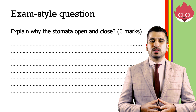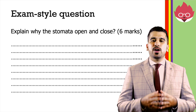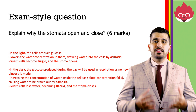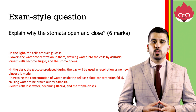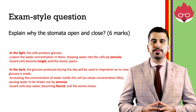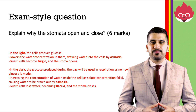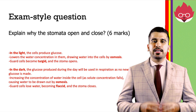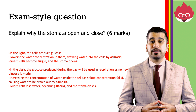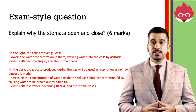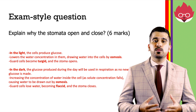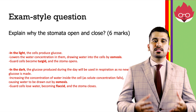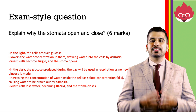Let's now look at an exam-style question: Explain why the stomata open and close. In the light, cells produce glucose, which lowers the water concentration in them, drawing water into the cell by osmosis. The guard cells become turgid and the stomata opens. In the dark, the glucose produced during the day will be used up in respiration as no new glucose is made, increasing the concentration of water inside the cell. This causes water to be drawn out by osmosis. The guard cells lose water, becoming flaccid, and the stomata closes.